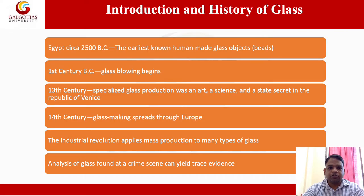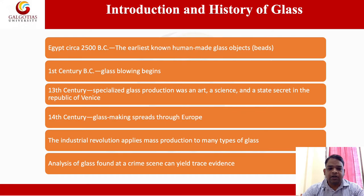Introduction and history of glass. In Egypt, 2500 BC, the earliest known human-made glass objects. In the 1st century BC, glass blowing began. In the 3rd century, specialized glass production was an art, a science and a state secret in the Republic of Venice. In the 14th century, glass making spread through Europe. The industrial revolution applied mass production to many types of glass. Another series of glass found at a crime scene can yield trace evidence.